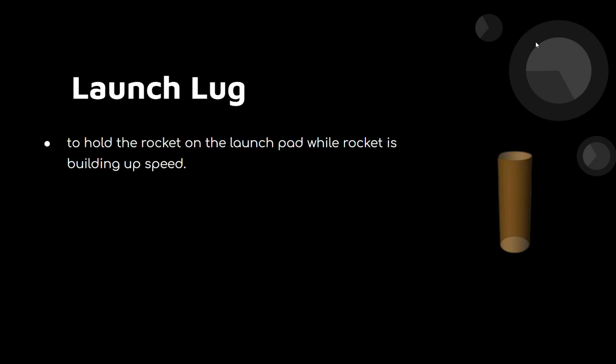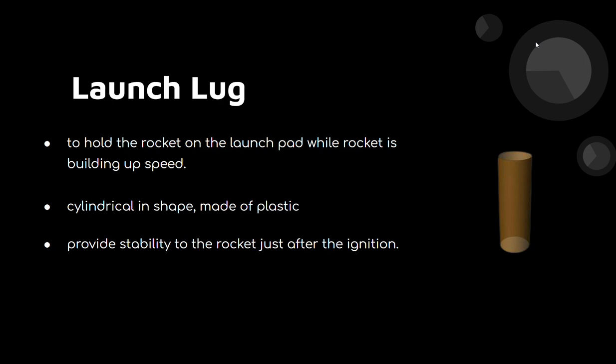The launch lock is a cylindrical component that holds the rocket on the launch pad while the rocket is building up speed. When actual rockets launch, they are held by cables and a steel structure on the launch pad — the launch lock does the same work for model rockets. It's generally cylindrical, made of plastic, and attached to the body tube near the CG point. This provides stability to the rocket just after ignition, when a huge force acts on the rocket and it needs to be stabilized to move in a straight vertical upward path.